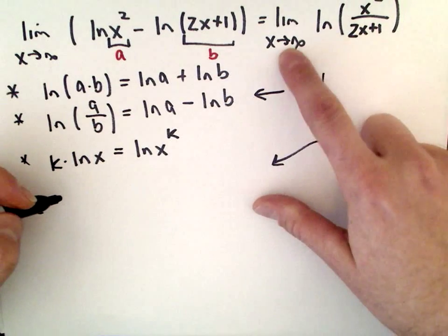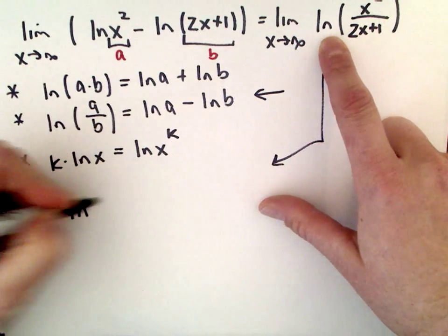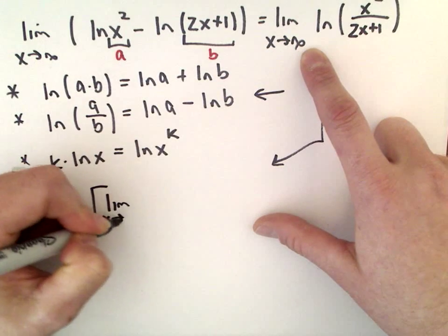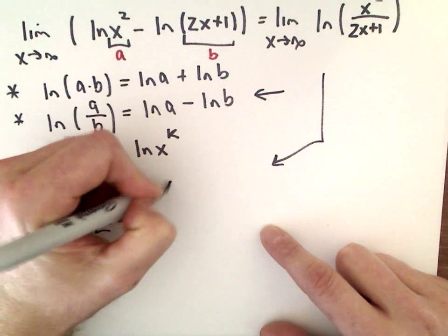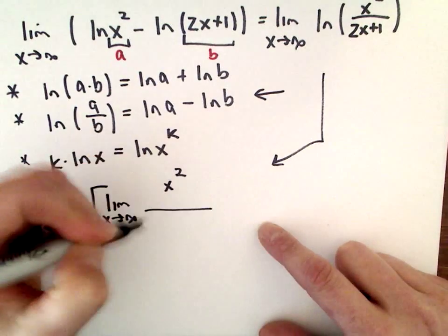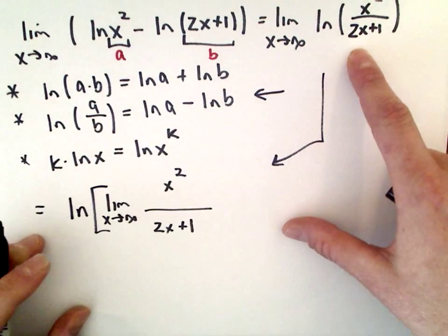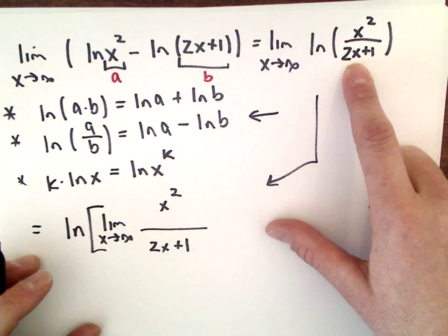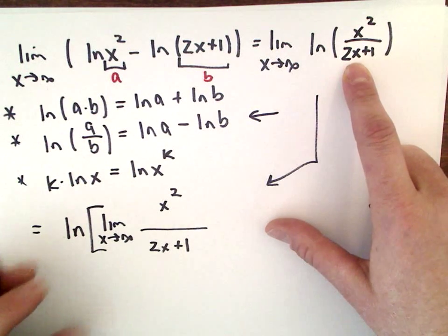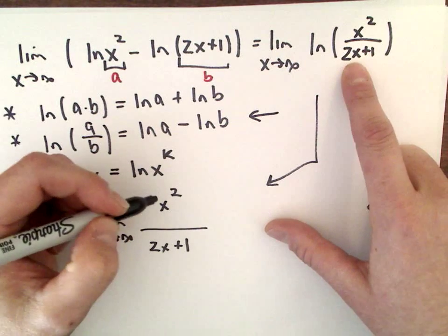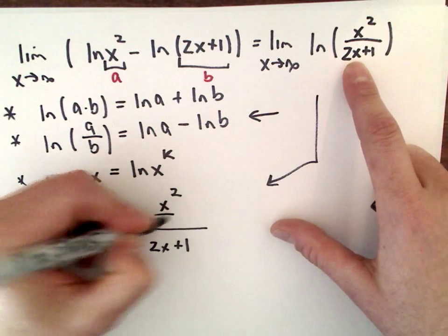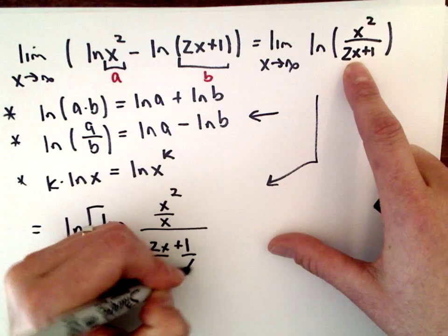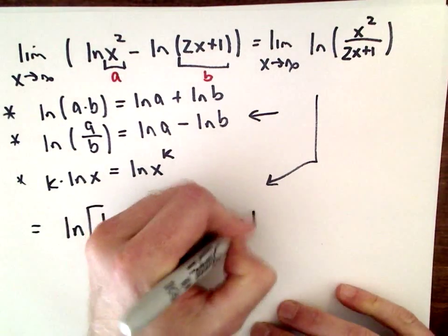This is the natural logarithm of the limit as x goes to infinity of x squared divided by (2x+1). I'm going to do the same thing we did before: look at the highest power of x in the denominator and divide everything by that. The highest power of x in the denominator is x to the first, so I'll have x²/x, 2x/x, and 1/x.